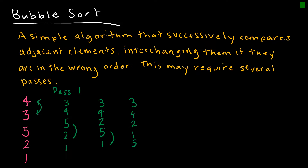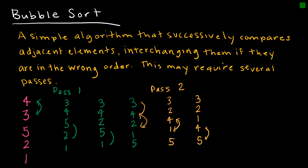That all happened in pass one, where I looked at each pair. In pass two, I start at the top again: 3 and 4 are in the right order; 4 and 2 are not, so they switch, giving 3 2 4 1 5. Then I look at 4 and 1 — not in the right order — giving me 3 2 1 4 5. Then 4 and 5 are in the right order.